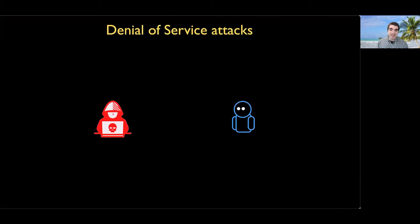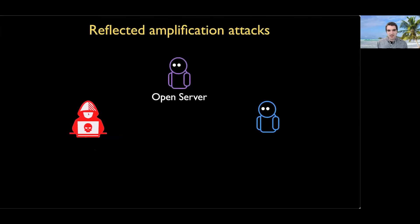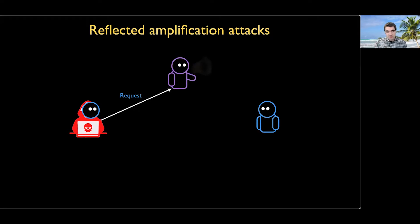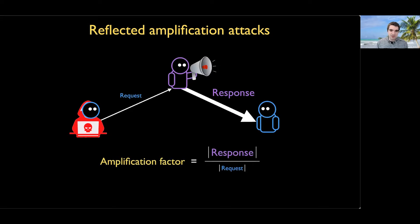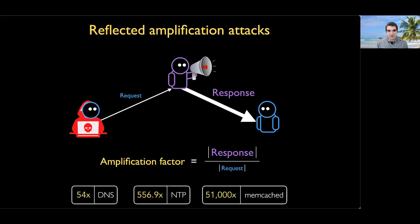The goal of this attack is for some attacker to flood and overwhelm the bandwidth of the victim to make them unavailable. A powerful tool is that of a reflected amplification attack, where an attacker uses an open server to assist. The attacker pretends to be their victim by spoofing their IP address, sends a request to this open server, which then responds to the victim — ideally with a response much larger than the request. We can quantify the amplification factor as the size of the response divided by the size of the request. Historically there have been some very large attacks like this: DNS, NTP, memcached, just to name a few.